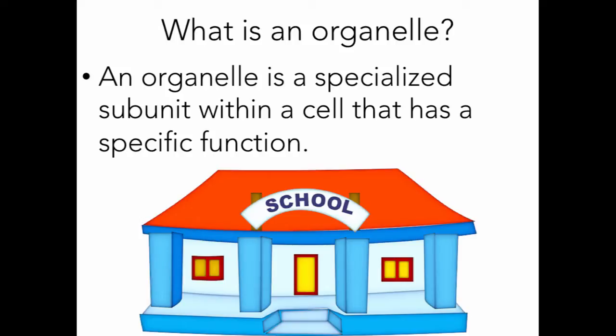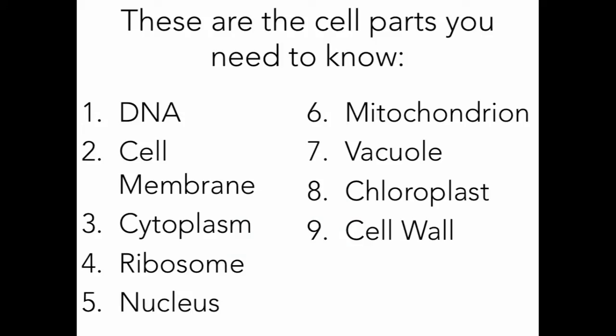In the same way, a school has little compartments that do different jobs. For example, a school has science classrooms, history classrooms, English classrooms, math classrooms, a cafeteria, the main office, bathrooms, locker rooms, gyms, and so on. Each little section of the school is like an organelle of a cell. These are the cell parts you need to know — they are not all technically organelles, but for now we're going to think of organelles as cell parts and lump them all together.